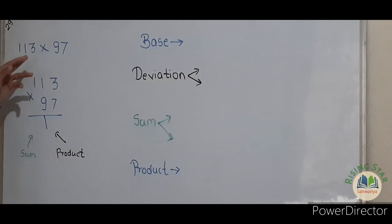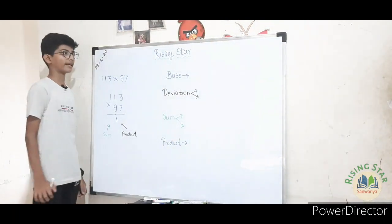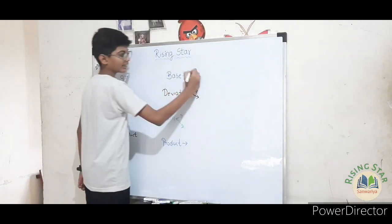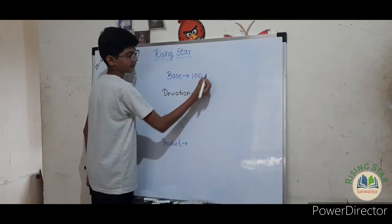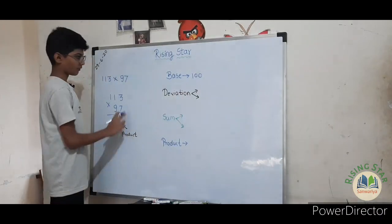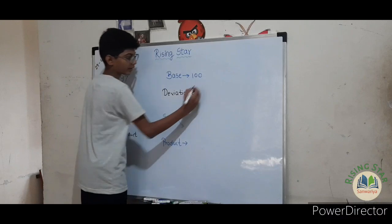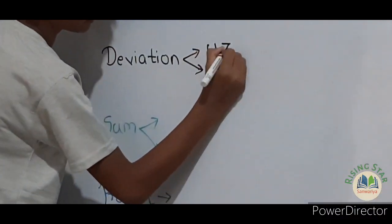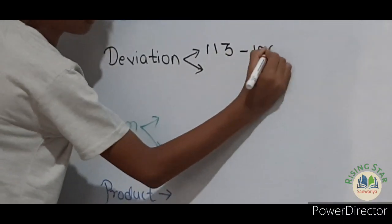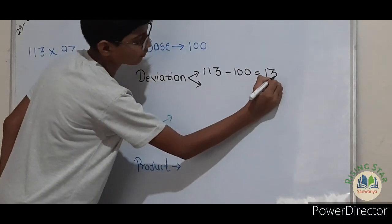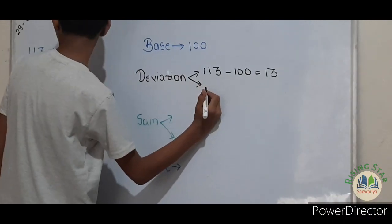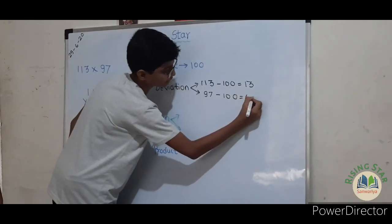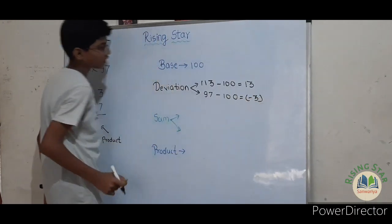So let's find the base. 113 and 97 are near to 100, so 100 will be our base. Now let's find the deviation. You have to subtract the base from the numbers. 113 minus 100 gives 13, and 97 minus 100 gives minus 3.